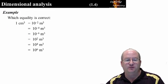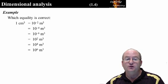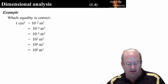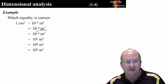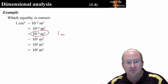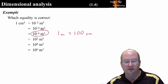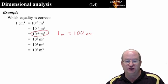Here is a quick assessment for you. Please pause this presentation and determine which equality is correct. You should have calculated that one cubic centimeter equals 10 to the minus 6 cubic meters. If you did not realize that it is one meter that equals 100 centimeters and that you need to cube this relationship to convert from cubic centimeters to cubic meters.